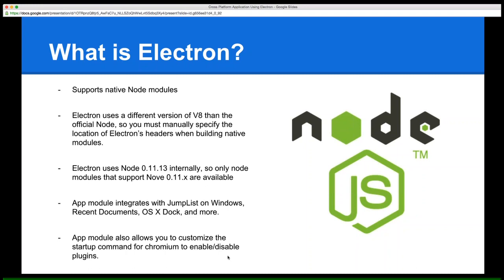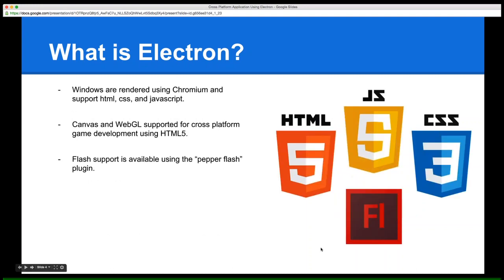The app module also allows you to launch Chromium and specify what flags you want, enabling or disabling different V8 plugins like WebRTC. On the front-end side, every window is rendered as a web view in Chromium — you have HTML, CSS, and JavaScript support, anything supported in Chromium or V8 is available. You have HTML5 canvases including WebGL, which enables cross-platform game development. More recently they added Flash support using the Pepper Flash plugin, allowing web views that load Flash objects, so you can bundle a Flash app using Electron.